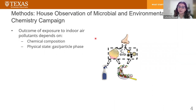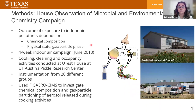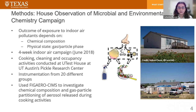The outcome of exposure to indoor air pollutants depends on: first, the chemical composition of the pollutants, and second, the physical state — whether they are in the vapor or particle phase. To study these two elements, we conducted a four-week indoor air campaign in June of 2018 where we simulated cooking, cleaning, and occupancy activities in a realistic home environment. Tests were conducted at the UT Test House at the University of Austin's Pickle Research Center. Outside the house, a number of trailers carried instrumentation from 20 different groups. Our group used the FIGAERO-CIMS to investigate chemical composition and gas-particle partitioning of aerosol released during cooking events.